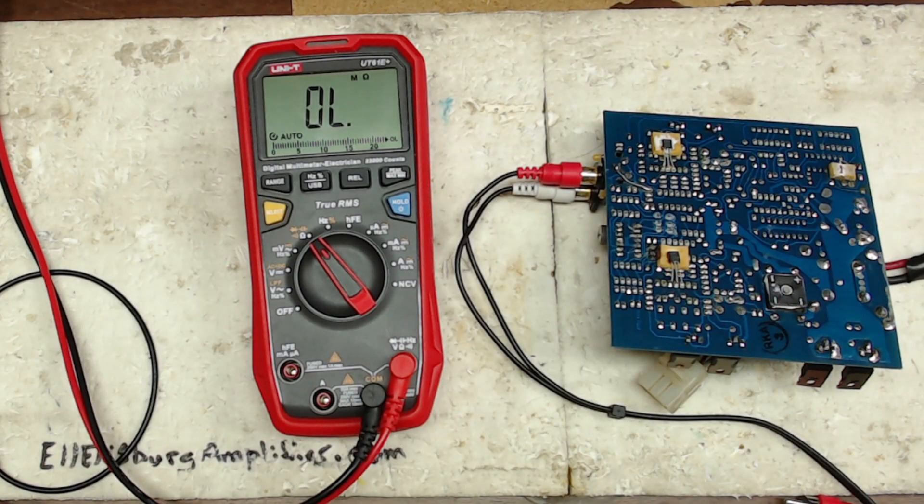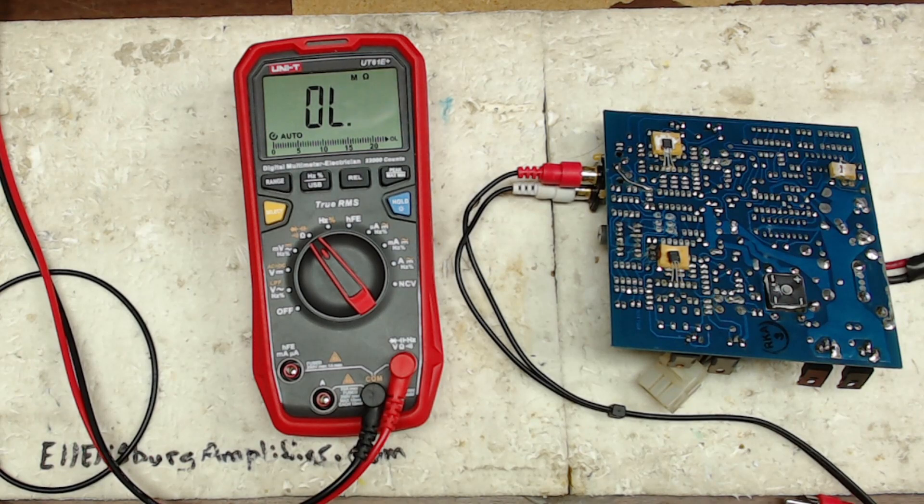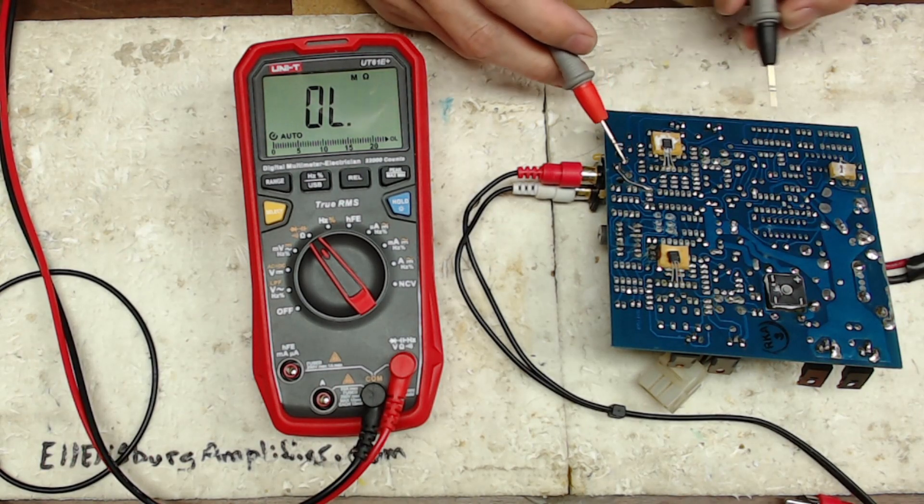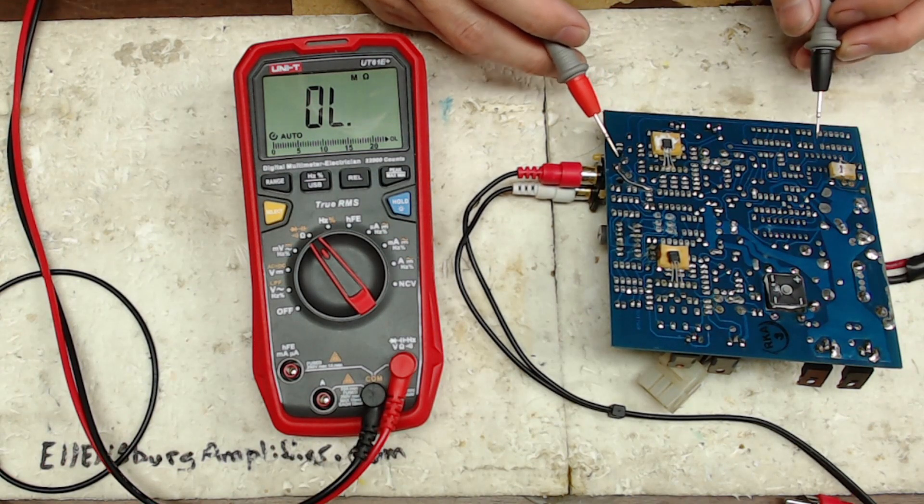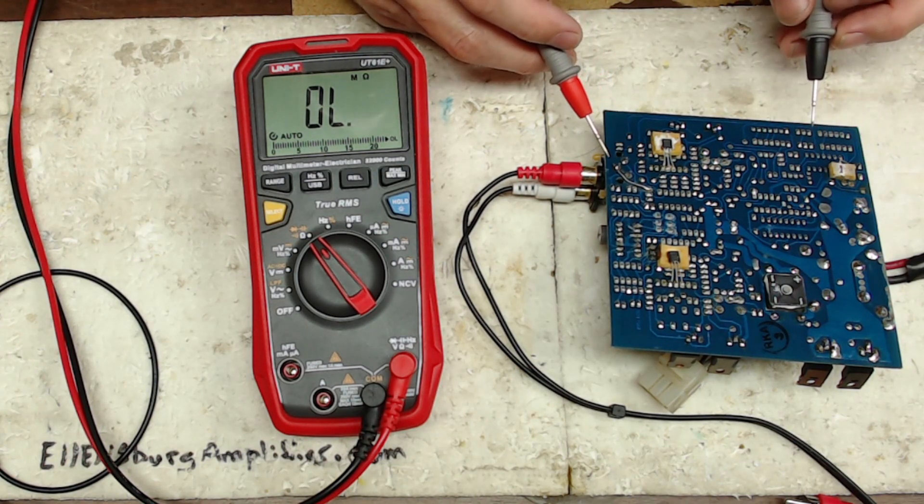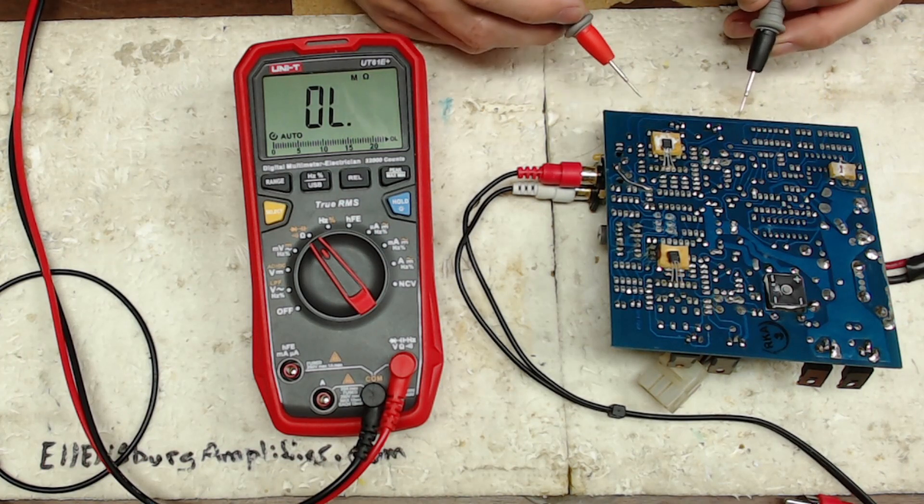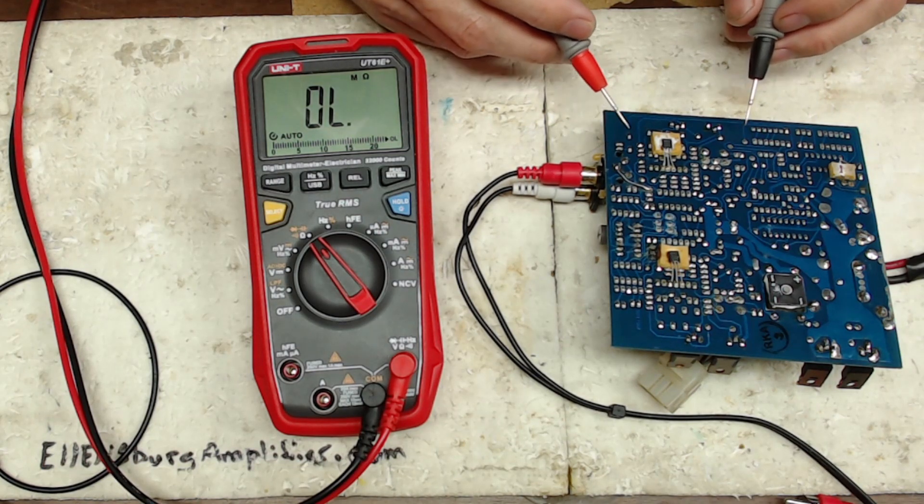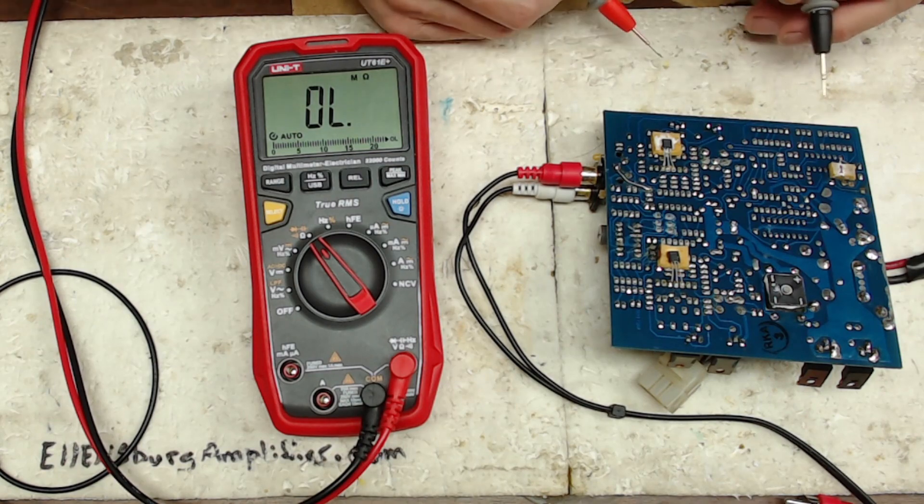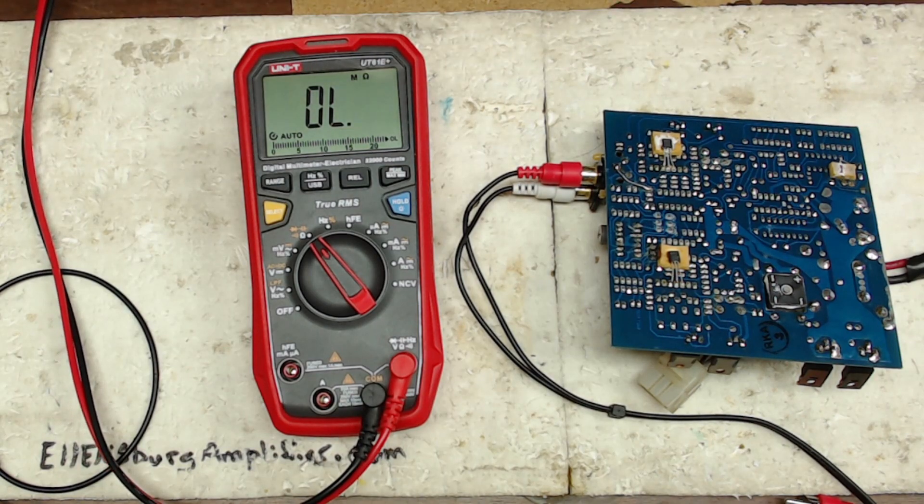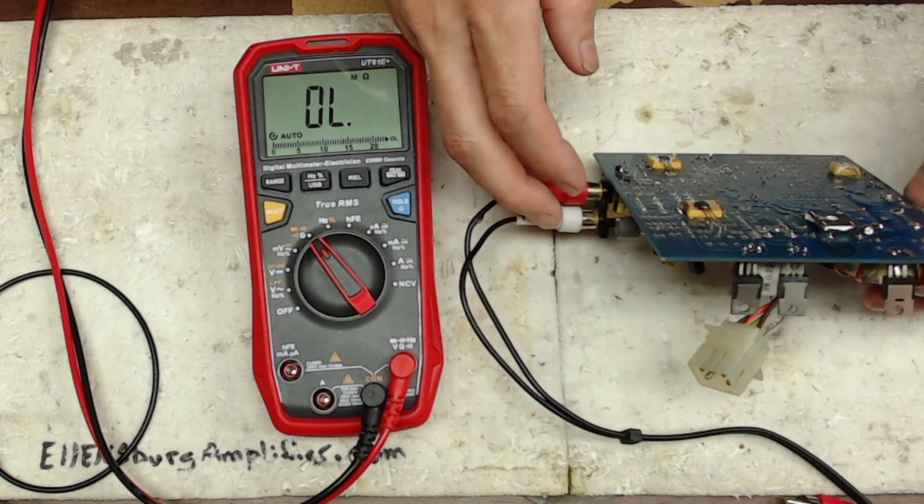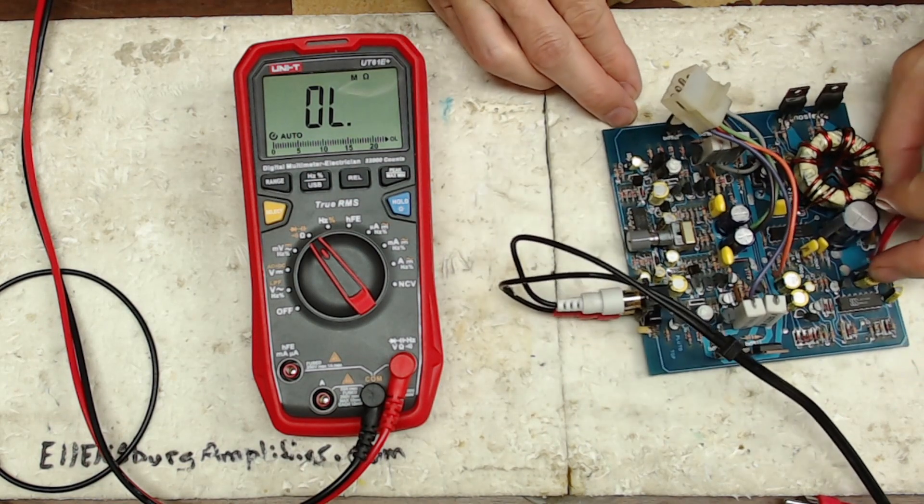Thank you for tuning into Ellensburg Amplifier Repair and Service. Today I have an amplifier board that's labeled on the other side Pluto, so I think it's a Maxonix, possibly Zed Audio board, just a two-channel amplifier that is presenting itself with a protection condition.